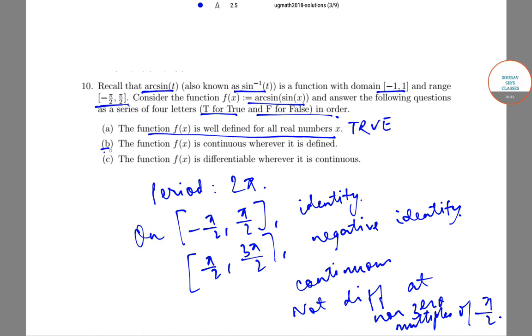Option (b), the function f(x) is continuous wherever it is defined, is also true. And option (c), the function f(x) is differentiable wherever it is continuous, is false.